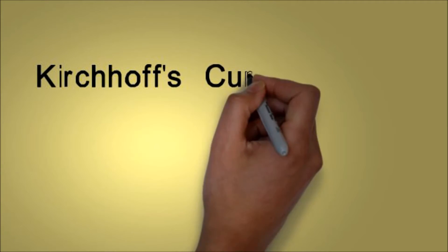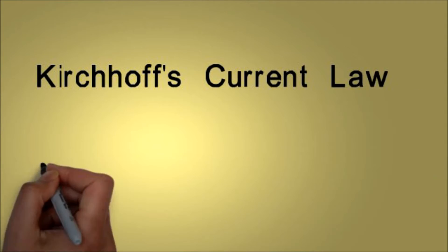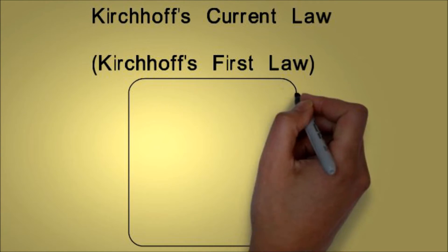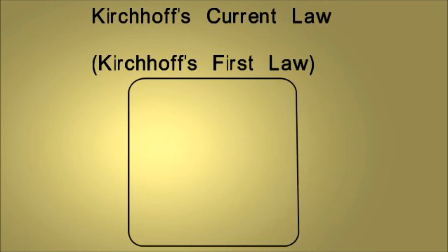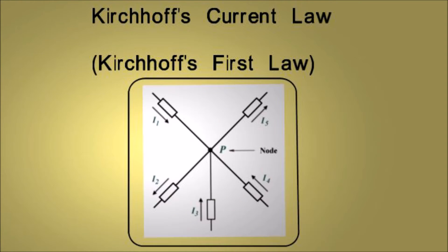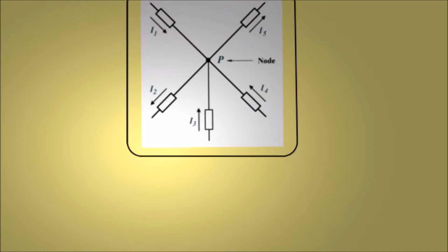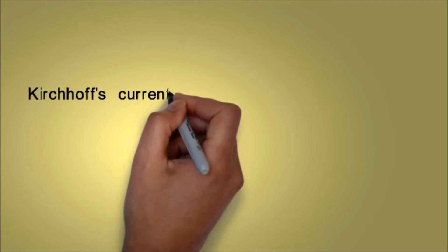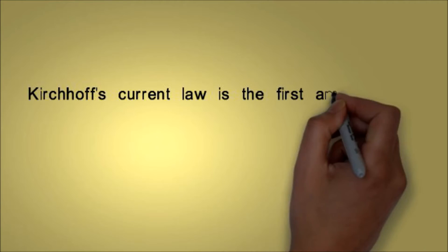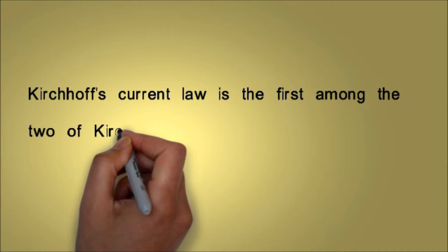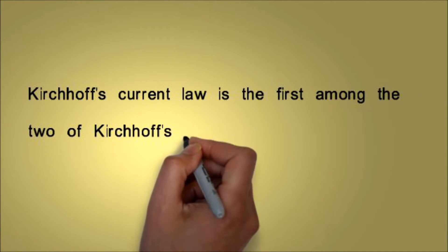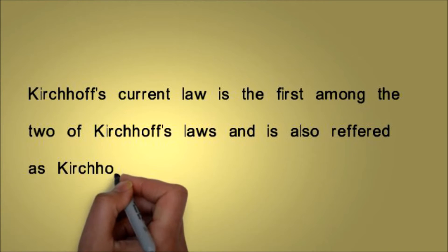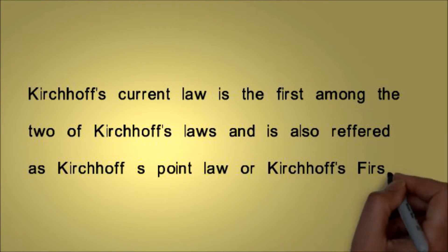Kirchhoff's Current Law, or Kirchhoff's First Law, is the first among the two of Kirchhoff's Laws and is also referred to as Kirchhoff's Point Law or Kirchhoff's First Law.